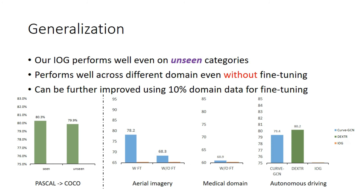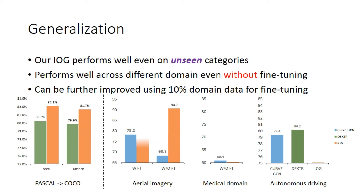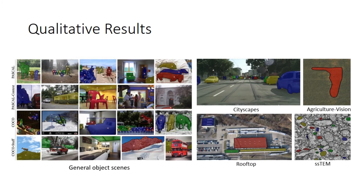In addition, our IOG also performs well on unseen categories and across different domains, such as aerial imagery, the medical domain, and autonomous driving scenes, even without fine-tuning. Here we show some additional qualitative results of our IOG. Please refer to our paper for more results.